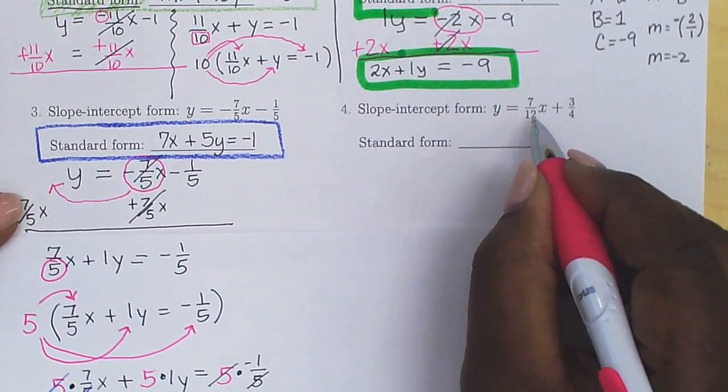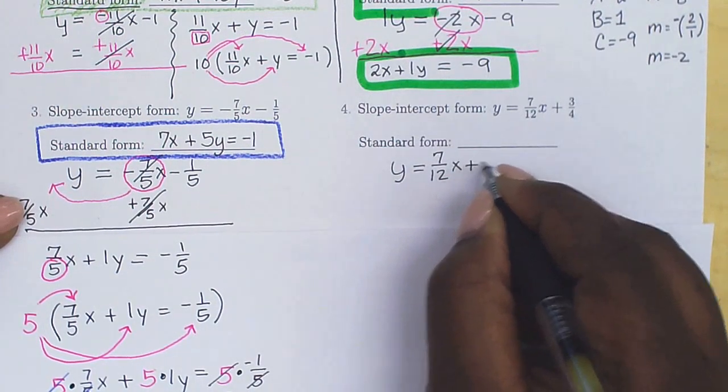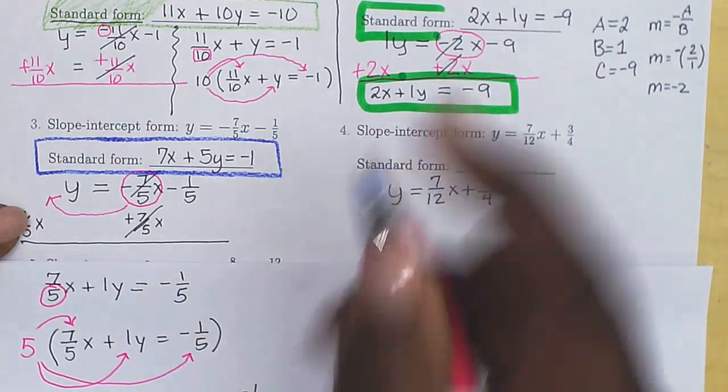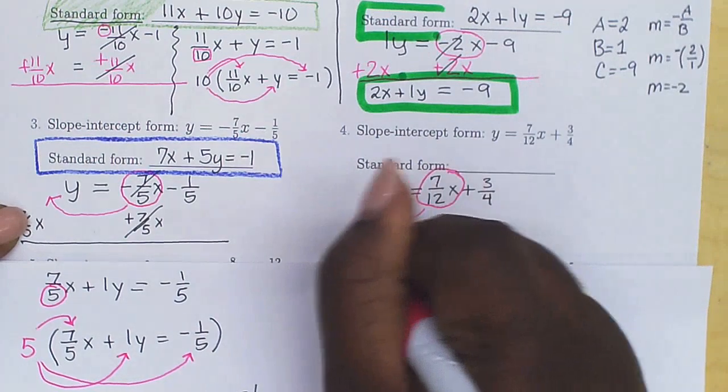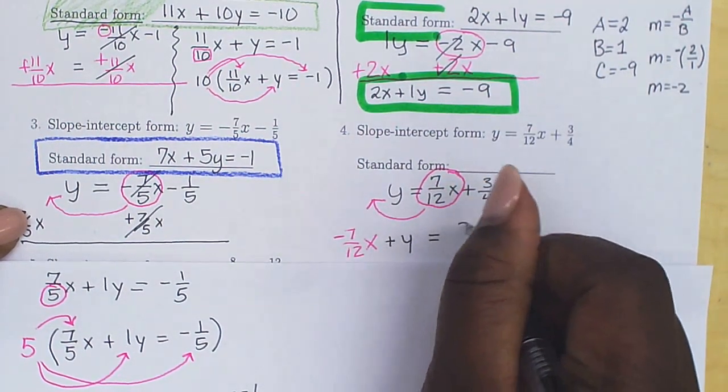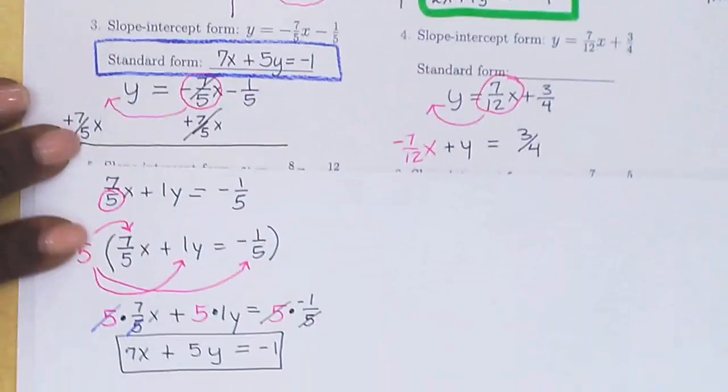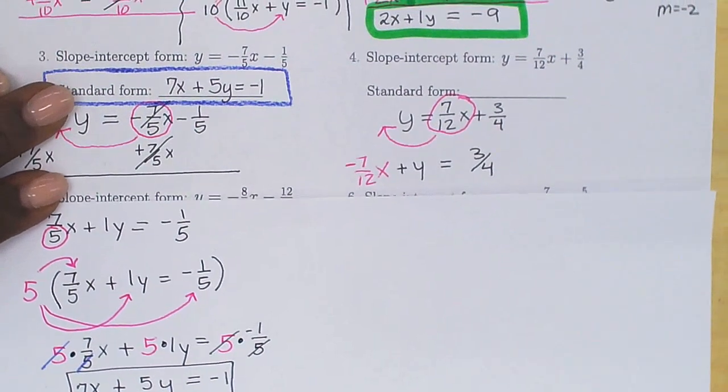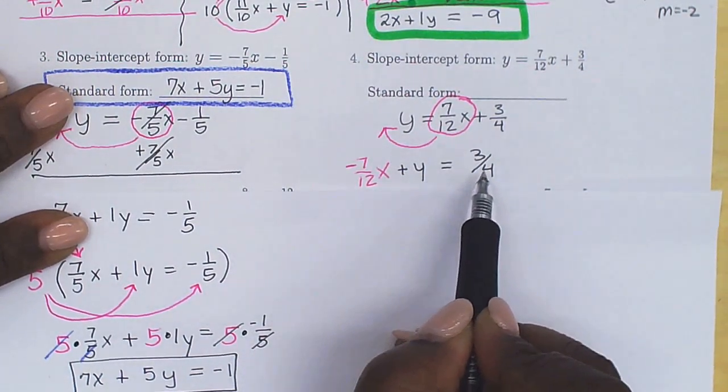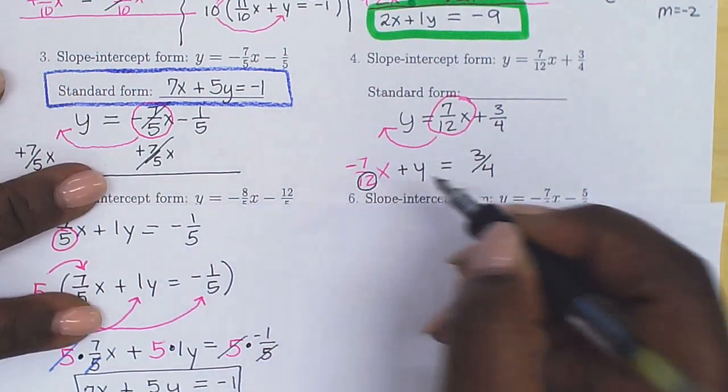Next one. We're going to write down the equation. Y equals 7 twelfths x plus 3 fourths. And this is a positive 7 twelfths. It's positive. So in order to move it, we have to make it negative to take it over here. So it's going to be negative 7 twelfths x plus y equals 3 fourths. I know I'm moving this quantity over here. So this is going to become negative 7 twelfths x plus y equals 3 fourths. We're going to multiply everything by this 12. So we're going to multiply everything by this 12.